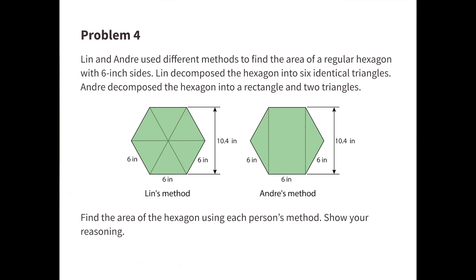Number 4. Lynn and Andre used different methods to find the area of a regular hexagon with six sides. Lynn decomposed the hexagon into six identical triangles. Andre decomposed the hexagon into a rectangle and two triangles. Find the area of the hexagon using each person's method. Show your reasoning.